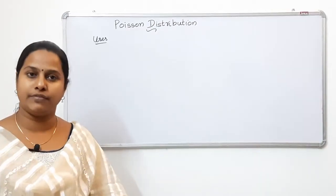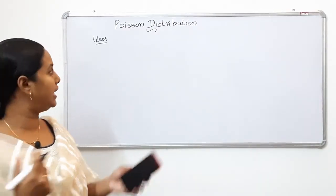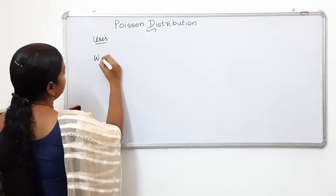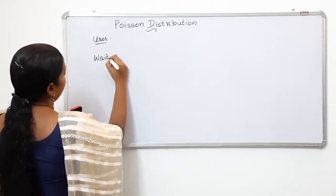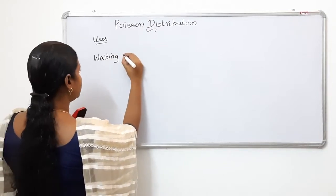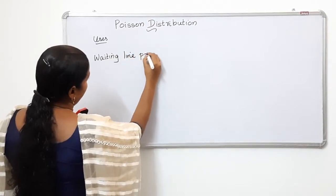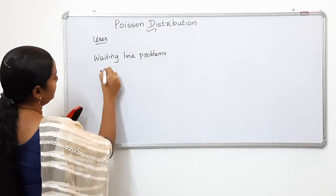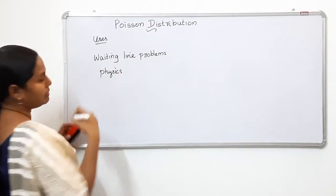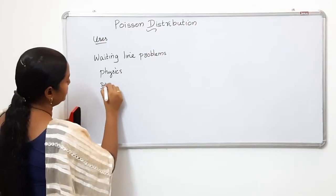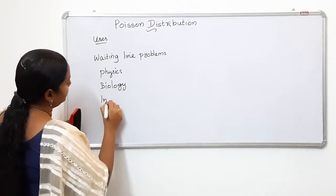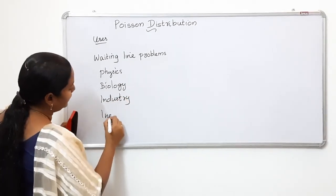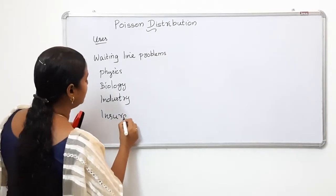The Poisson distribution is used in Queuing Theory. There are applications in physics, biology, industry, insurance fields, and economics fields.